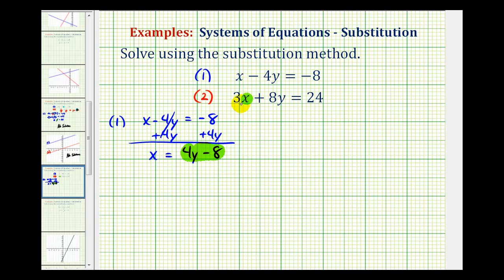So by performing this substitution, equation two would be three times, instead of x, we'd have four y minus eight plus eight y equals twenty-four.